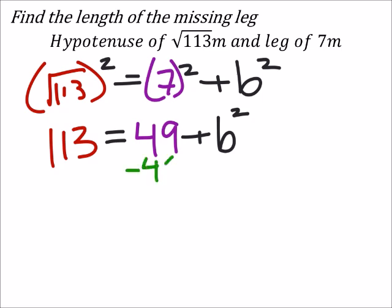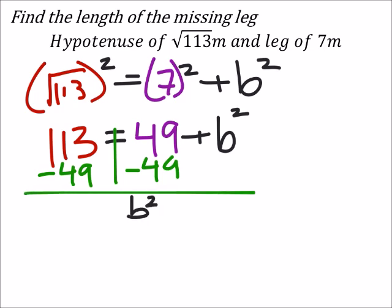So from here, we'll subtract 49 from both sides of the equal sign. And I've still got the b squared equals 64.